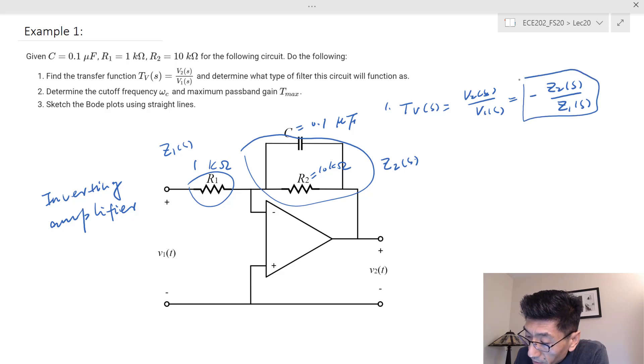We recognize Z2(s) is going to be equal to 1 over the sum of the admittances, which is 1 over R2 plus Cs. And Z1(s) is just equal to R1. So TV(s), the transfer function, is going to equal negative 1 over (1/R2 plus Cs) divided by R1.